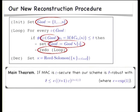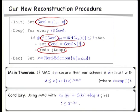The main theorem says that if the MAC is epsilon-secure, then our scheme is delta-robust where delta is bounded by a specific expression. The important thing is that delta is not of the order of epsilon as in the Rabin-Benor scheme, but of the order of epsilon raised to some power that is linear in N. This means we can save a factor N in the size of the keys and tags and still get exponentially smaller error probability.